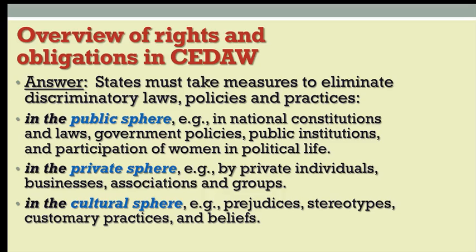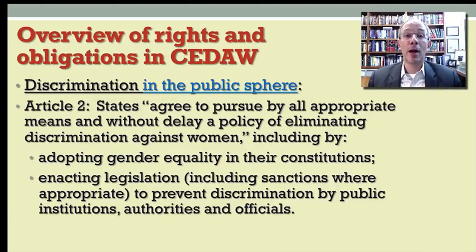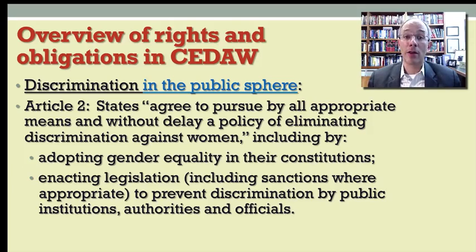Let's discuss an example of each of these spheres. Under Article II of the convention, discrimination in the public sphere is codified in language that requires states to pursue a policy of eradicating discrimination against women. They need to do that by adopting gender equality clauses in their constitutions and by enacting legislation or laws that include sanctions where appropriate to prevent discrimination by public institutions, by government authorities,